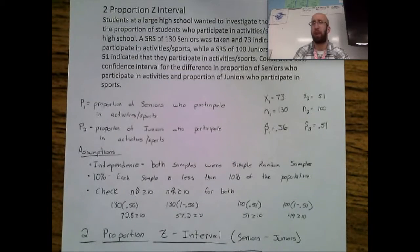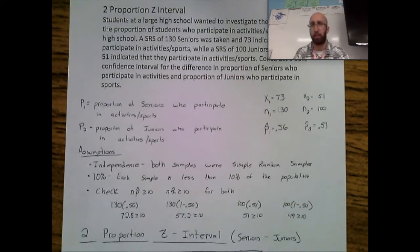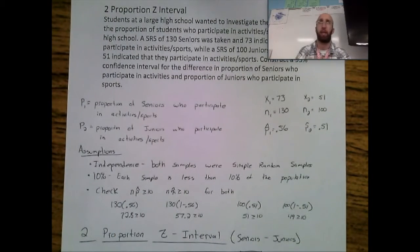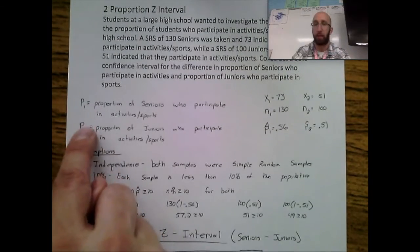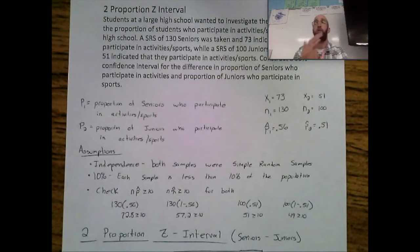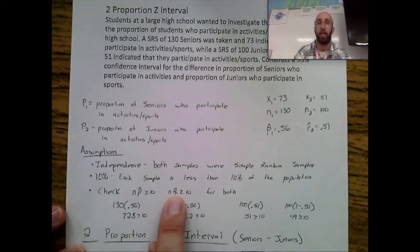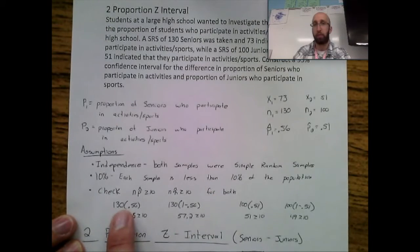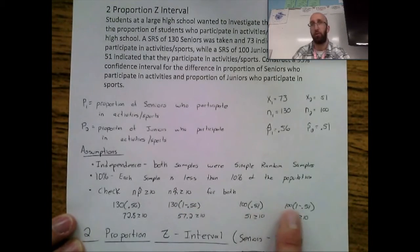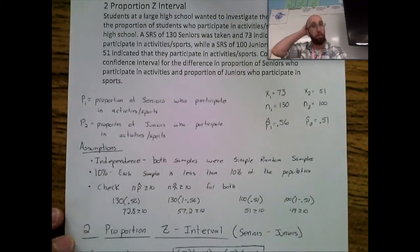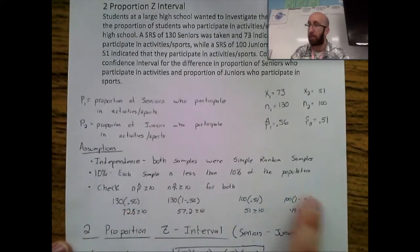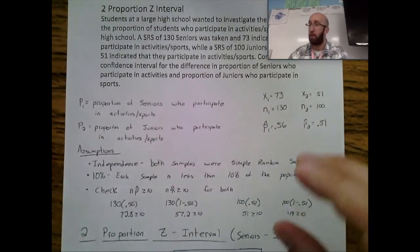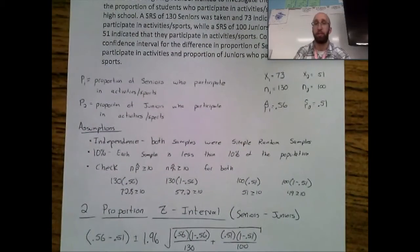The third assumption is the one I really pay attention to — it switches based on what you're doing. For proportions, we'd love to use NP and NQ, but we don't actually know what P or Q is. So if you don't know P, use p-hat instead; if you don't know Q, use q-hat instead. We need to check that N1·p-hat1, N1·q-hat1, N2·p-hat2, and N2·q-hat2 are all at least 10, confirming both samples are large enough to proceed.